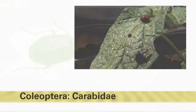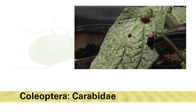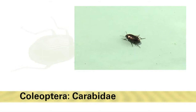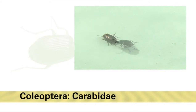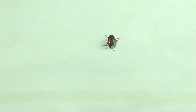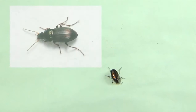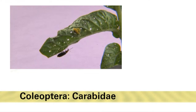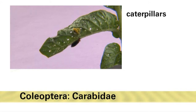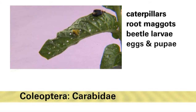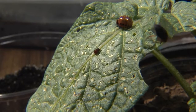Ground beetles in the family Carabidae are another important group of predatory beetles. As the name suggests, many ground beetles are predators of pests that occur on the ground or below ground. Many species forage at night and hide in the soil or in the leaf litter during the day. These beetles range in size from less than an eighth of an inch up to more than an inch in length. They are usually dark and shiny and may be metallic, and often have wing covers with striations or pits. Depending on the species, they may attack moth and butterfly caterpillars, root maggots, beetle larvae, insect eggs and pupae, or snails. Some ground beetles do climb onto foliage in search of prey; the large foliage ground beetle is an important predator of Colorado potato beetle larvae.